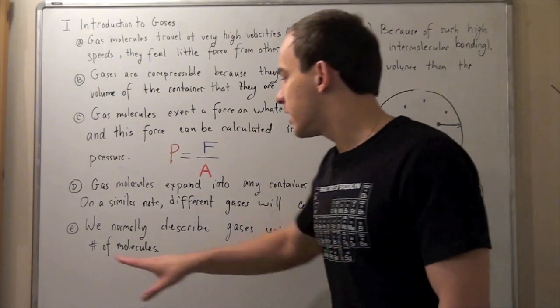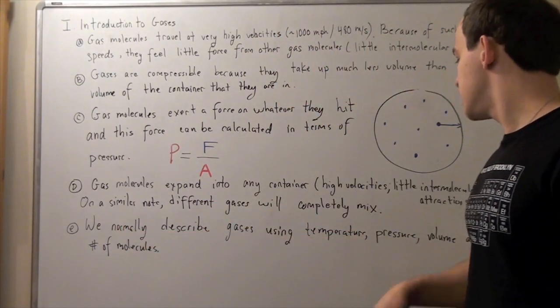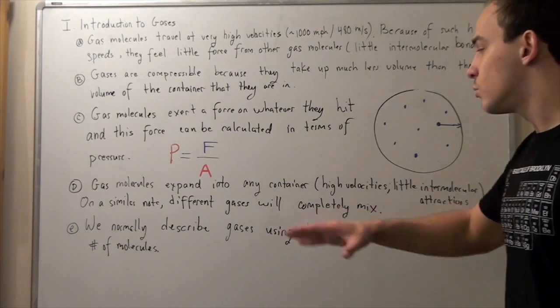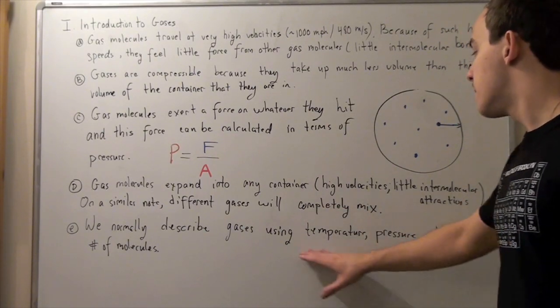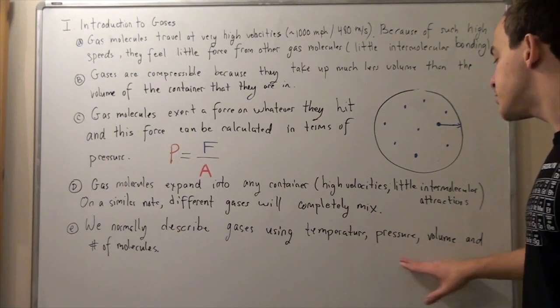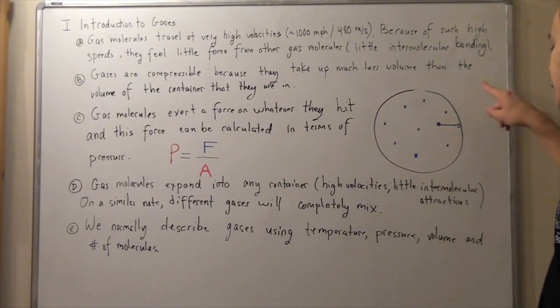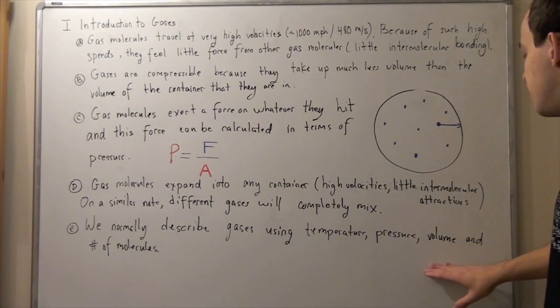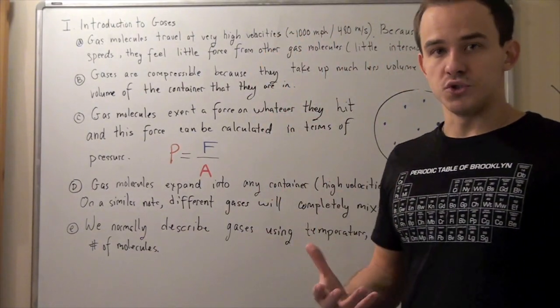The final thing we're going to look at is the following. We normally describe gases using temperature (and later we'll see how temperature and kinetic energy or speed of our molecules are related), pressure of our gas (the pressure that the gas exerts on the walls of the container), volume of the gas, and the number of molecules, normally in terms of moles.